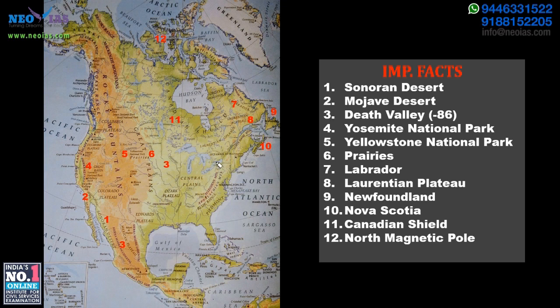Two key details to remember: the capital of Canada is Ottawa, located here on the map, and the capital of the US is Washington DC.